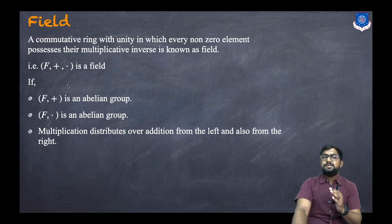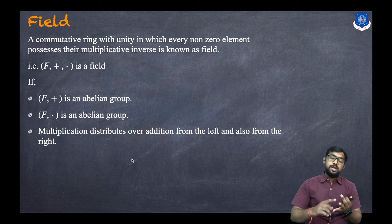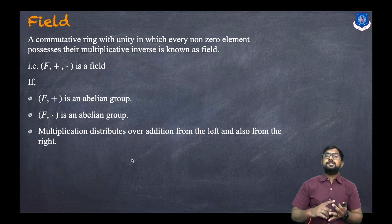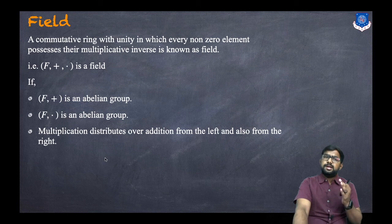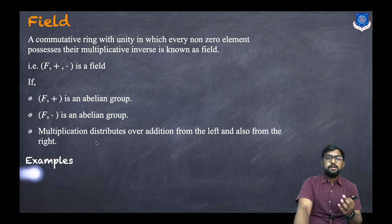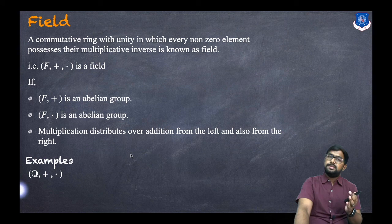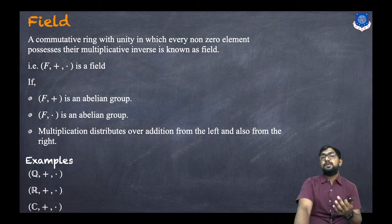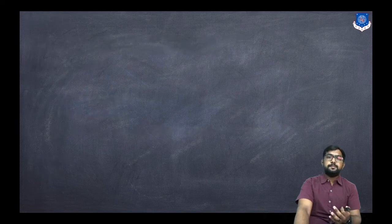For (F, +) and (F, ·) both being abelian groups, that means closure, associativity, existence of identity, existence of inverse, and commutativity must all hold. Multiplication distributes over addition from both left and right. Examples of fields: (Q, +, ·) is a field, (R, +, ·) is a field, and (C, +, ·) is a field.